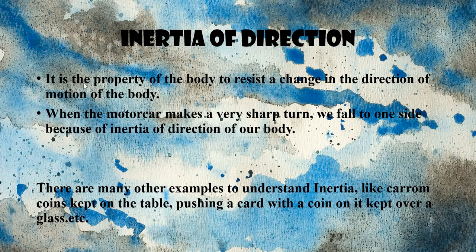Now let's see the inertia of direction. It is the property of the body that resists a change in the direction of motion of the body. When a motor car makes a very sharp turn, we fall to one side because of the inertia of direction of our body — meaning when the motor car takes a sharp turn, we experience this effect because of inertia of direction.